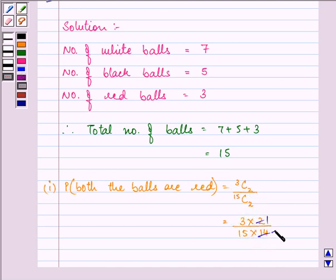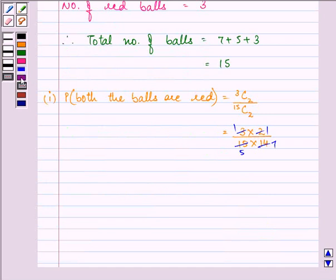On simplifying, we have the answer to the first part as 1 by 35.